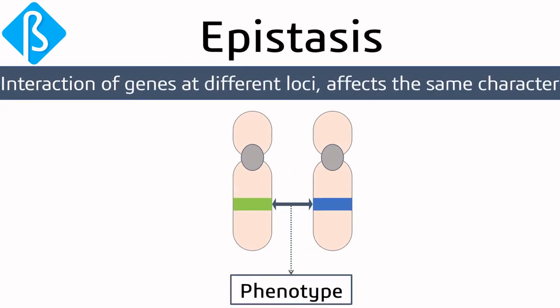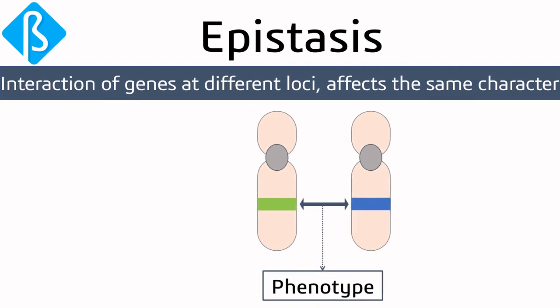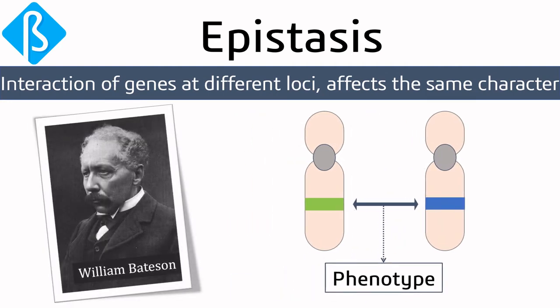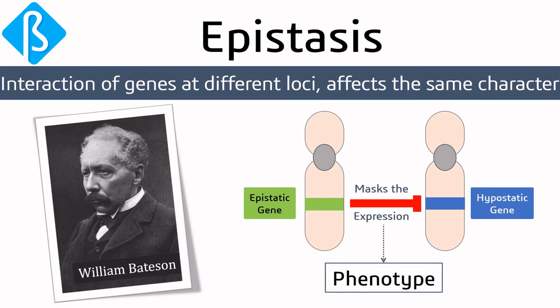If the interaction of genes at different loci affects the same character, it is called epistasis. The term epistasis was first given by Bateson in 1909. He described that from two different genes affecting the same character, one masks the expression of the other gene. The one who masks is called the epistatic gene, and the one whose expression is masked is called the hypostatic gene.